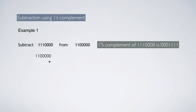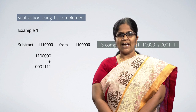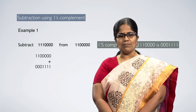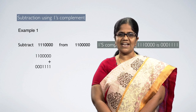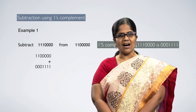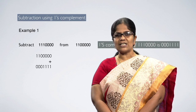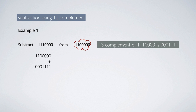In this case, 111000000 — the 1's complement of that is 00011111. Now we have two numbers with us. Perform regular binary addition. The two numbers are 11000000 from the question and 00011111, which is the 1's complement of 111000000 from the question.